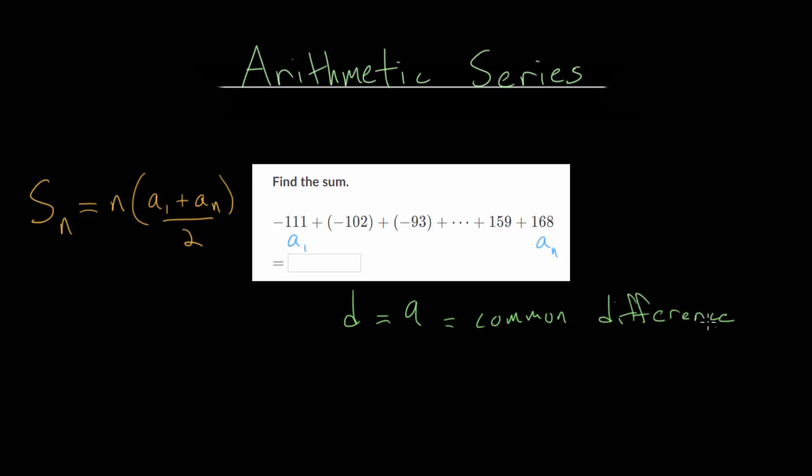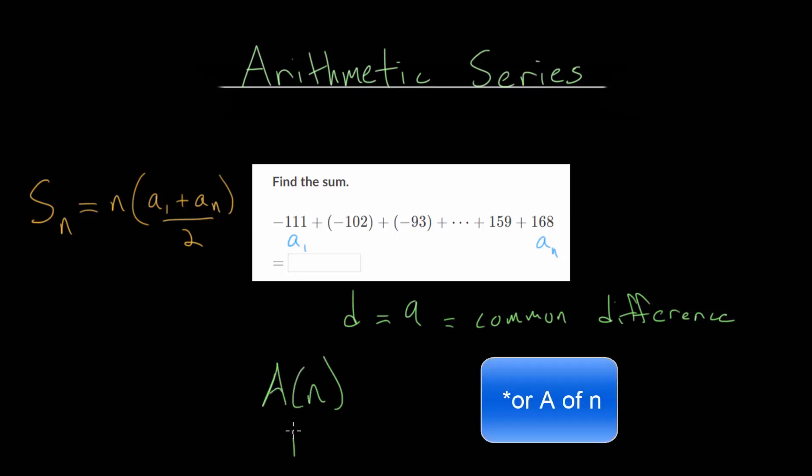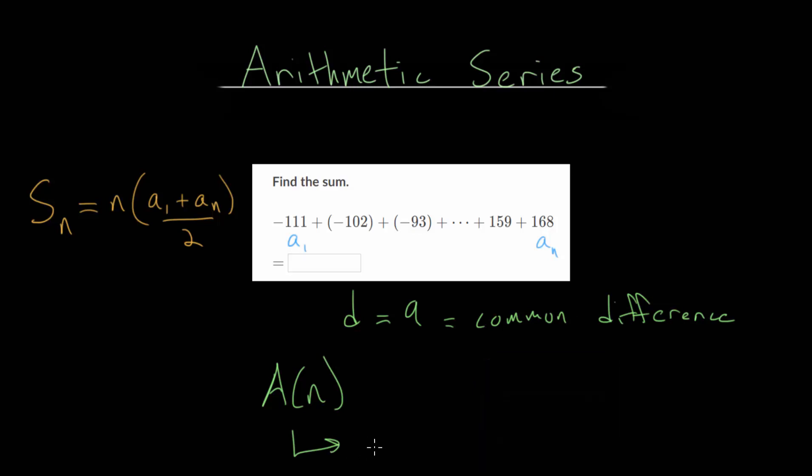We also know the explicit formula for an arithmetic sequence. If we're looking for the nth term in our sequence, A sub n, this term can be found by looking at the first term, A sub 1, plus the common difference multiplied n minus 1 times. So we're going to add that common difference n minus 1 times to get to the last term.